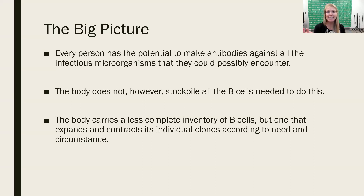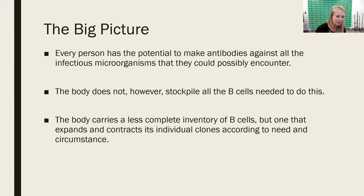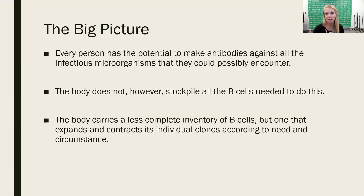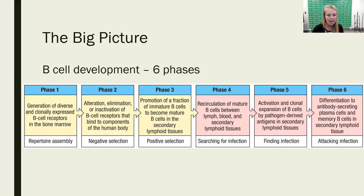The body doesn't keep all this stored up, nor does it keep a full number of B-cells — our bone marrow or blood would be busting at the seams because it's just too many cells. So rather than keep a stockpile of all these different B-cells, the body carries a much smaller inventory that can expand and grow when needed. We're going to talk a lot about clonal expansion of B-cells to make enough antibody to fight off infection, depending on whatever pathogen or foreign invader we come into contact with.